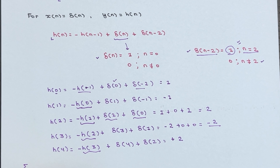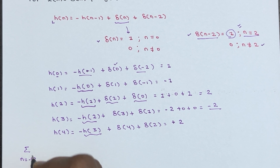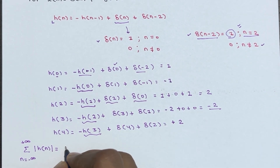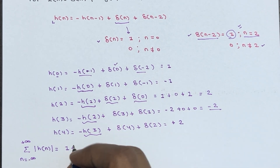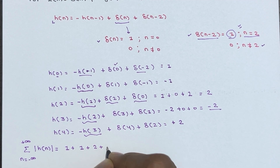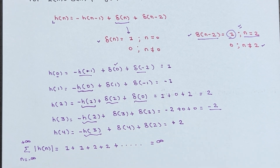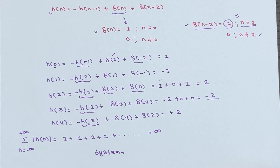If we take the summation from n = -∞ to +∞ of the absolute value of h(n), we get |1| + |-1| + |2| + |2| + ... = 1 + 1 + 2 + 2 + ... which equals infinity. Since this sum is infinity, the system is unstable.